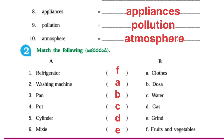Second one — Match the following: Refrigerator — fruits and vegetables. Washing machine — clothes. Pan — dosa. Pot — water. Cylinder — gas. And Mixi — grind.